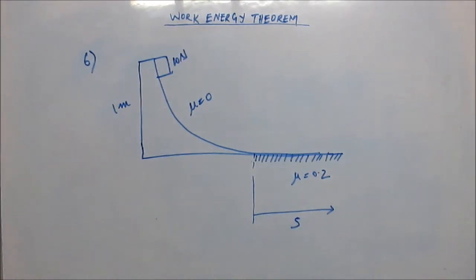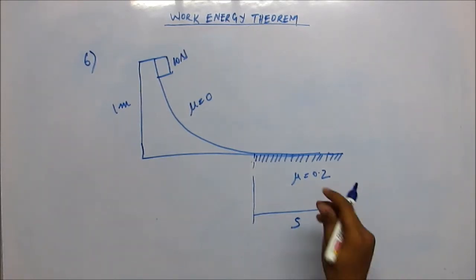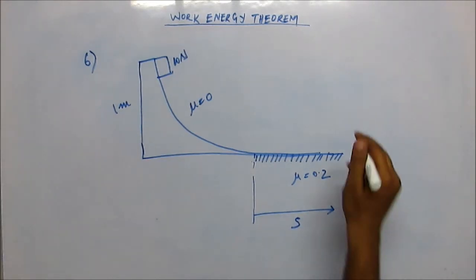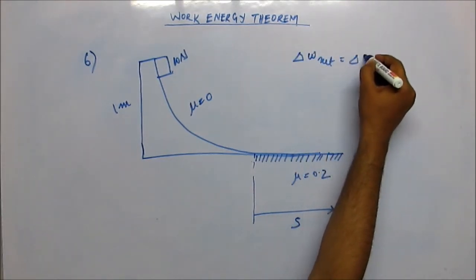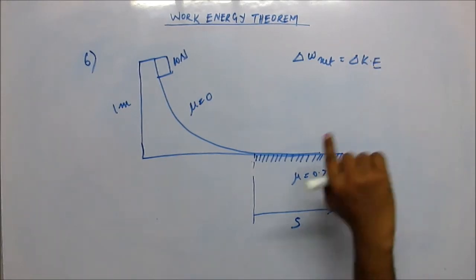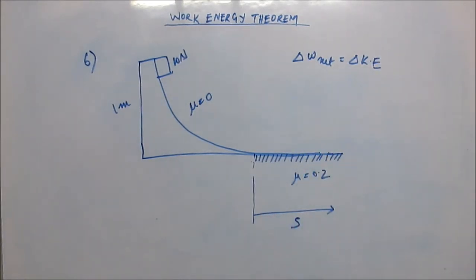This is a simple, trivial kind of question but do it fast. Use work energy theorem: work done, net work done, is change in kinetic energy. Net work done would be work done by gravity and work done by friction because there is no other force.